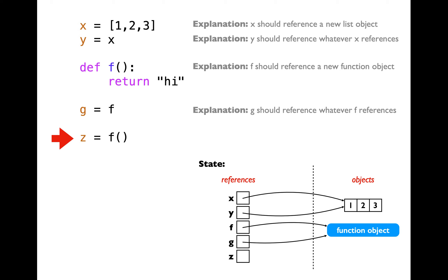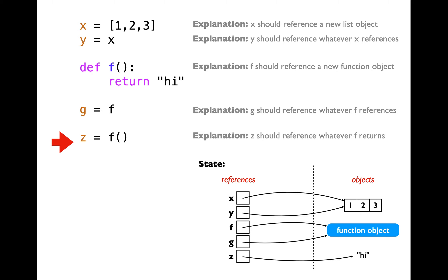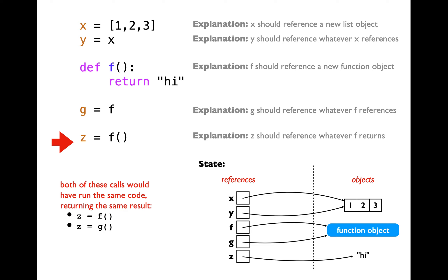The next line should be pretty familiar. We invoke the function by saying f with parentheses and assign whatever is returned into the variable z. So z is now going to contain a reference to the string object 'hi'. When you call the function by saying z equal to f() or z equal to g(), you're saying the exact same thing, because by saying g equal to f, we just created a new name for the function f. So both g and f refer to the same function object.